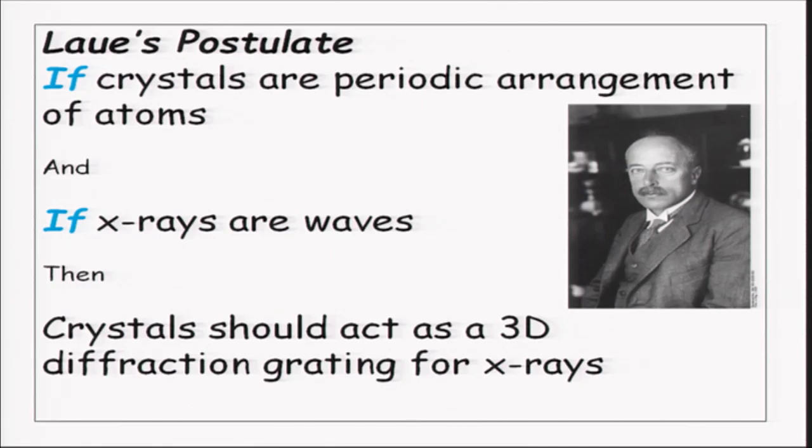This postulate was already there, and also now there was another tool, that X-rays, and there was a question that whether X-rays are waves or particles. Laue put these two things together and he made a postulate that if crystals are periodic arrangement of atoms and if X-rays are waves, then crystals should also act as a 3D diffraction grating for X-rays. There should be diffraction, crystals should diffract X-rays. This was the conclusion or the thought conclusion of Laue.